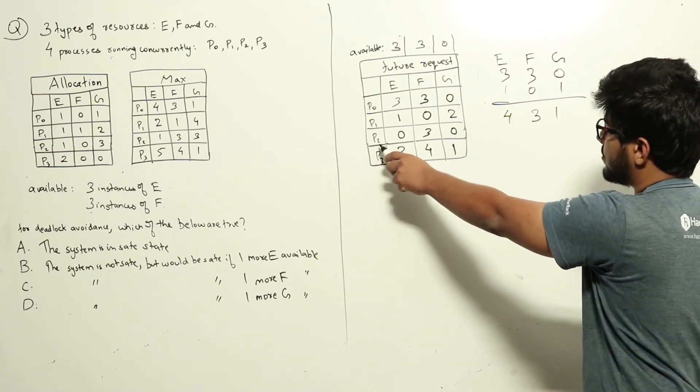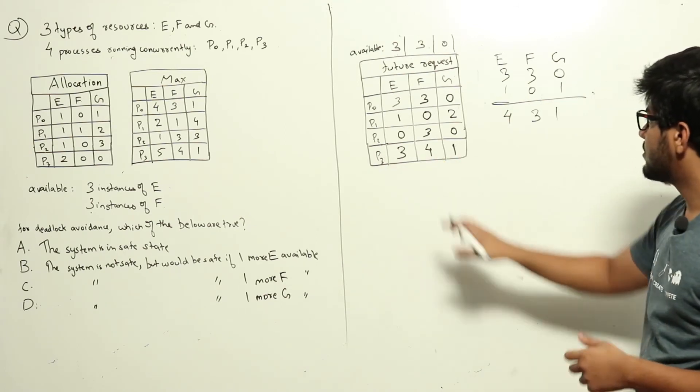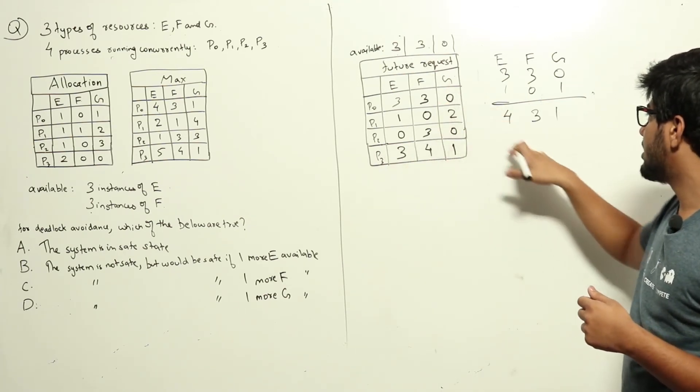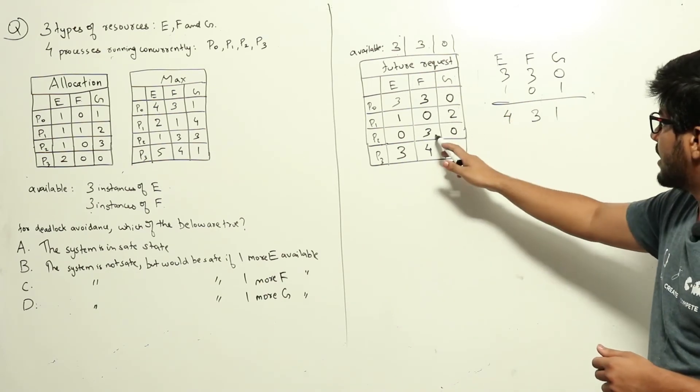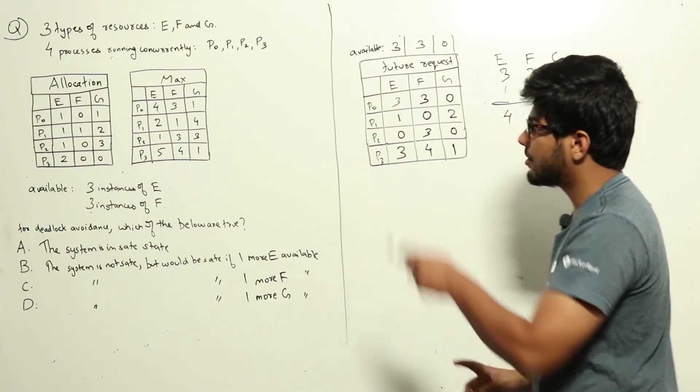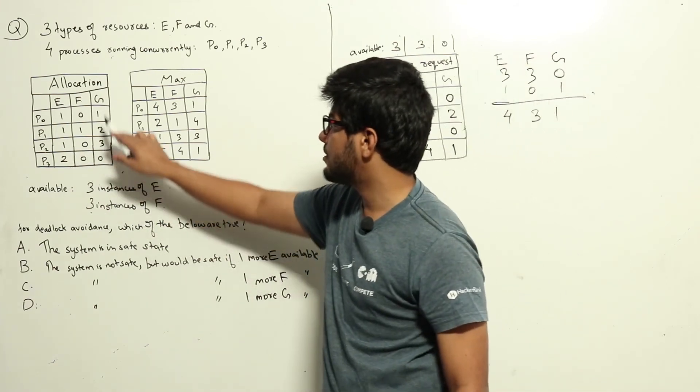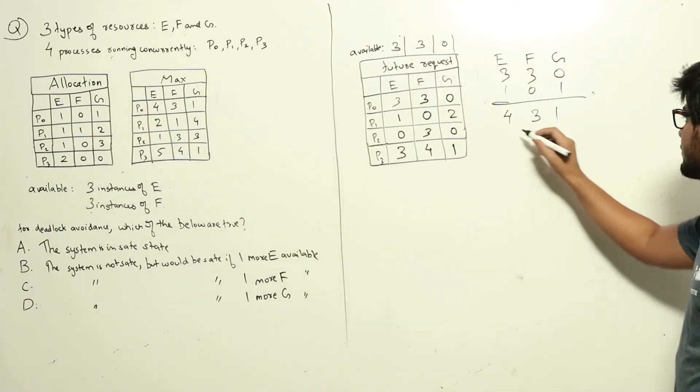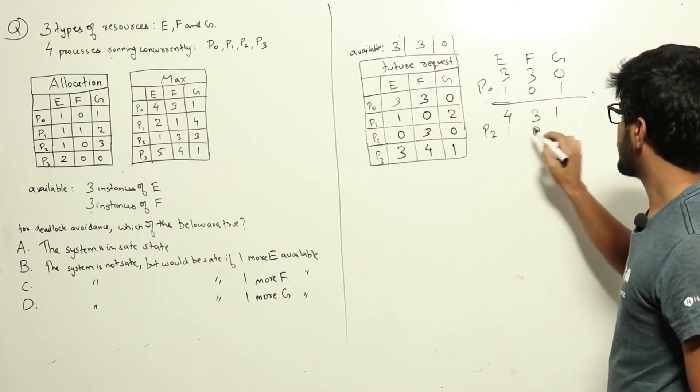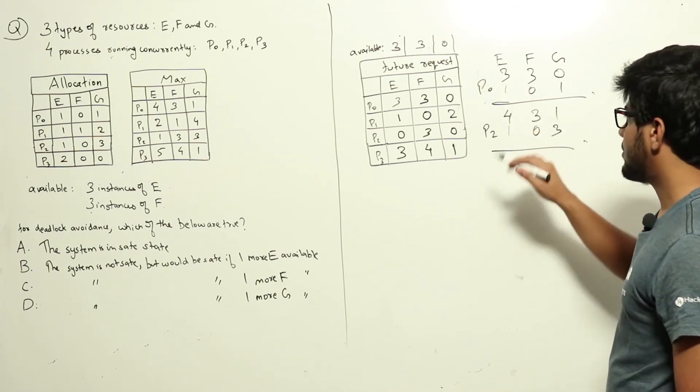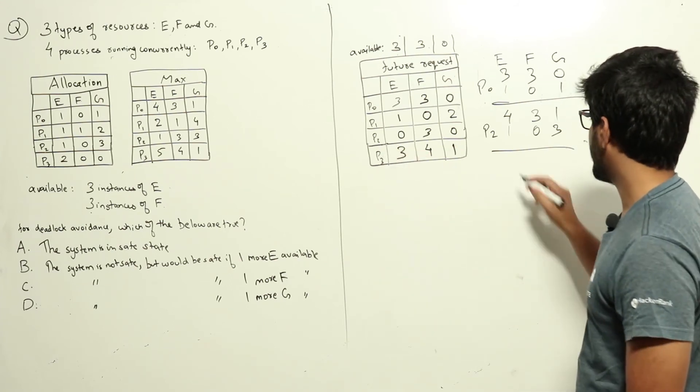We can clearly satisfy this one as well. This only needs three resources of type F, which we already have. So let us allocate the resource to P2. P2 runs and it will release one, zero, and three of these types.